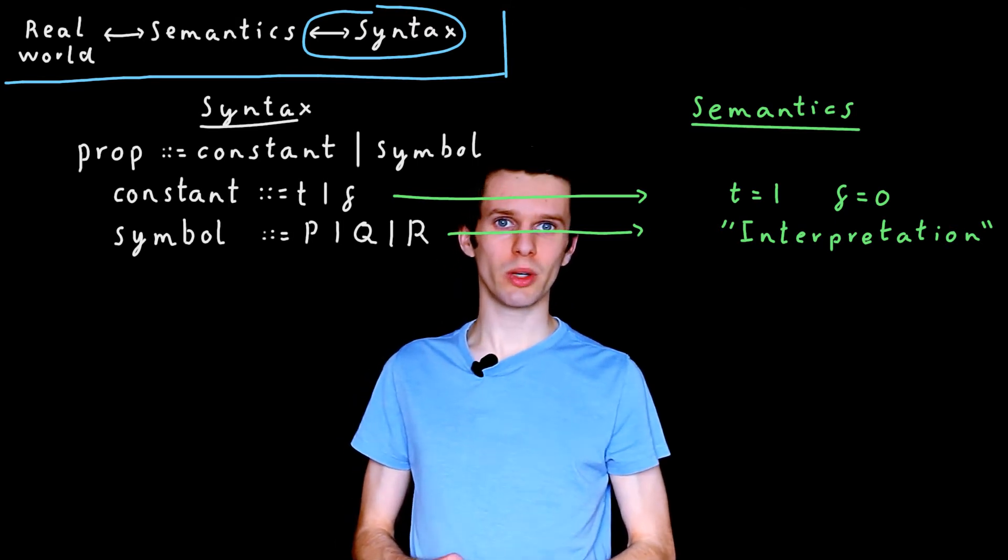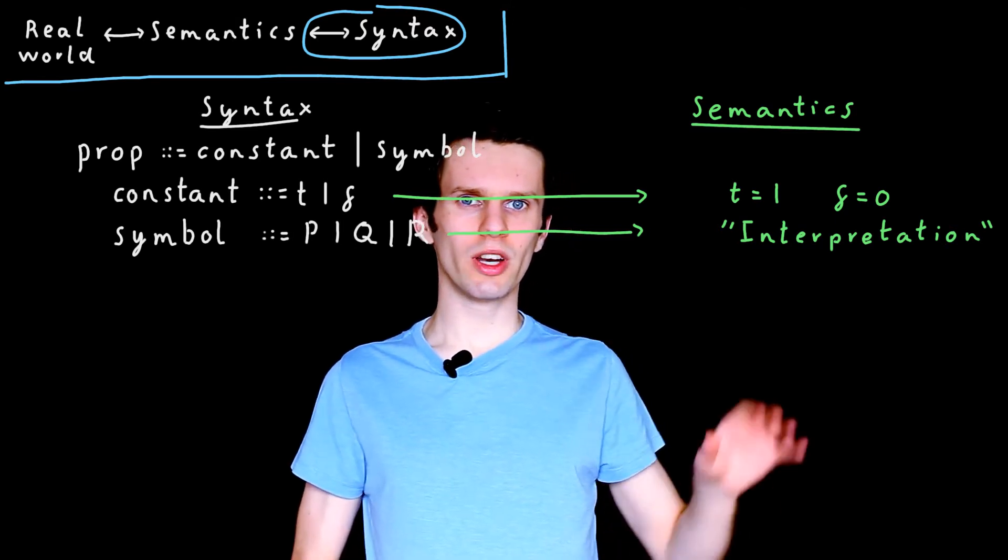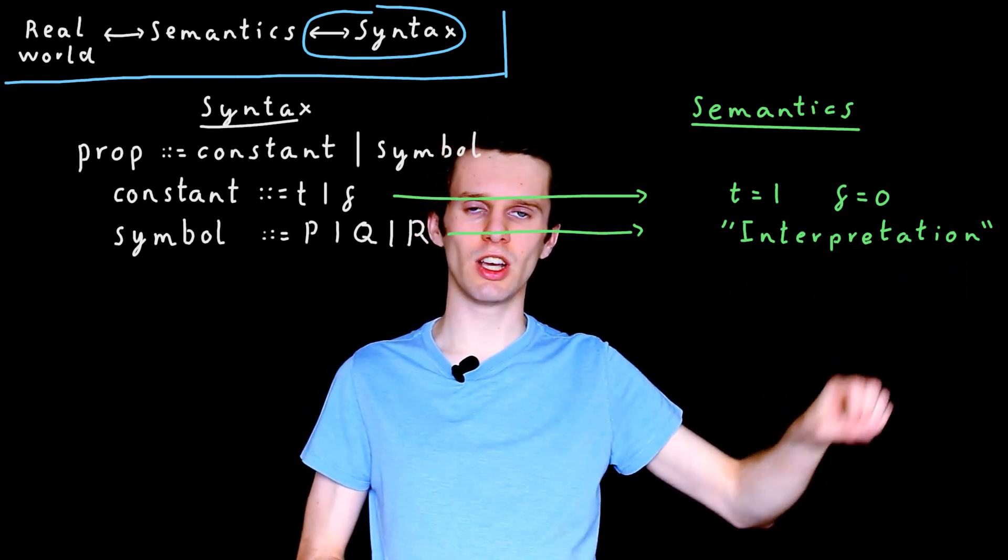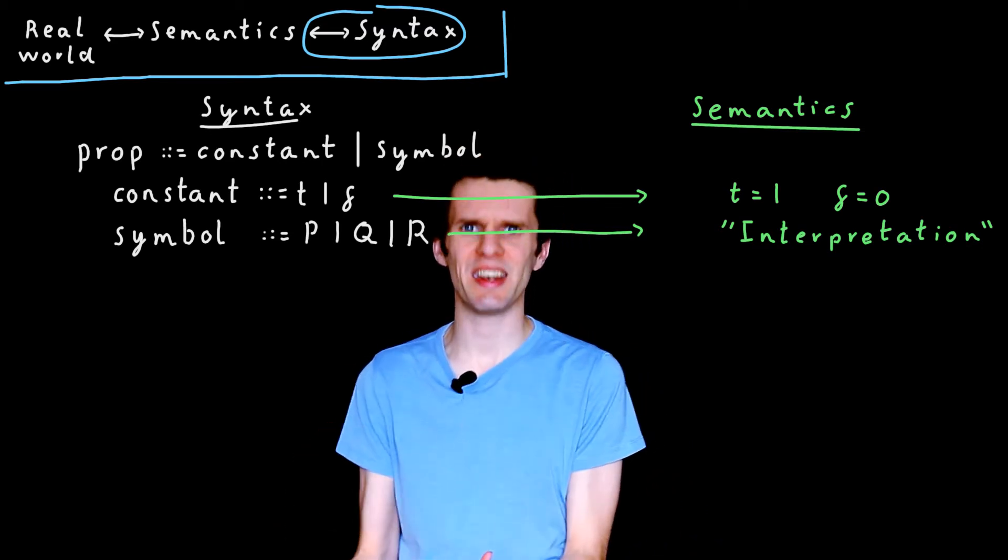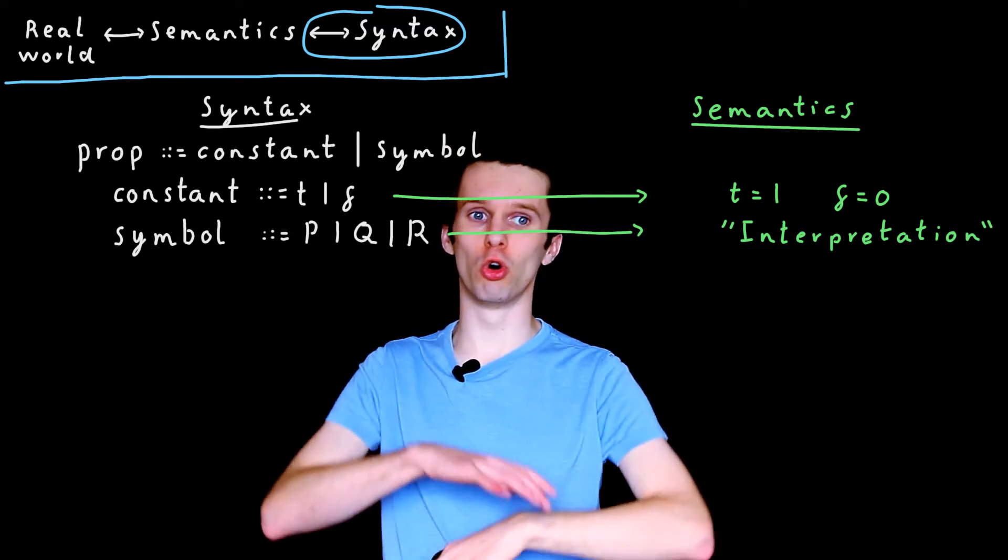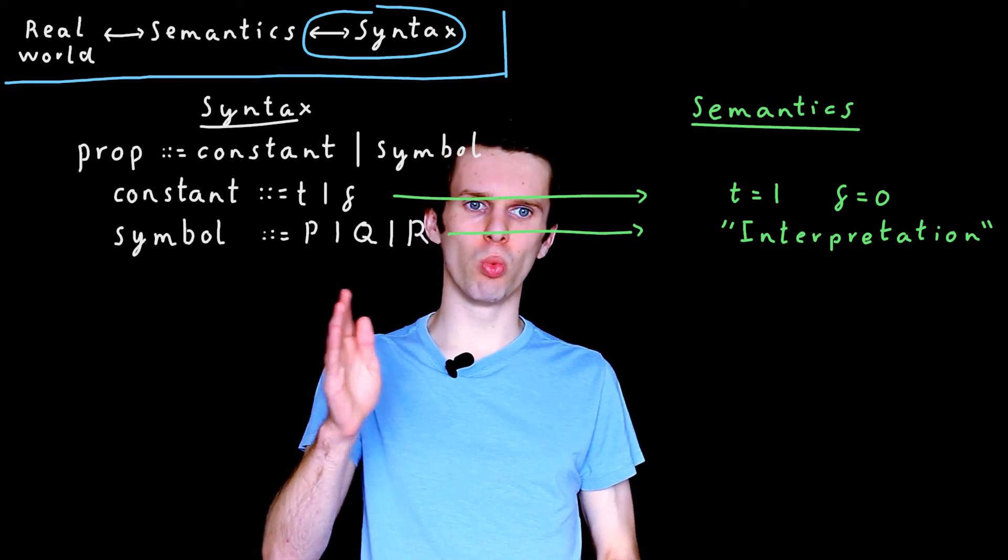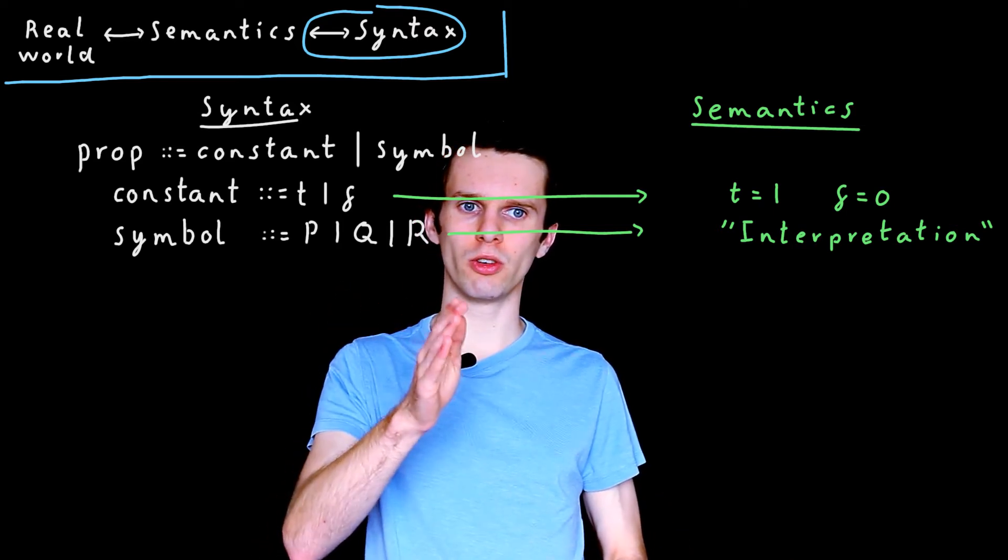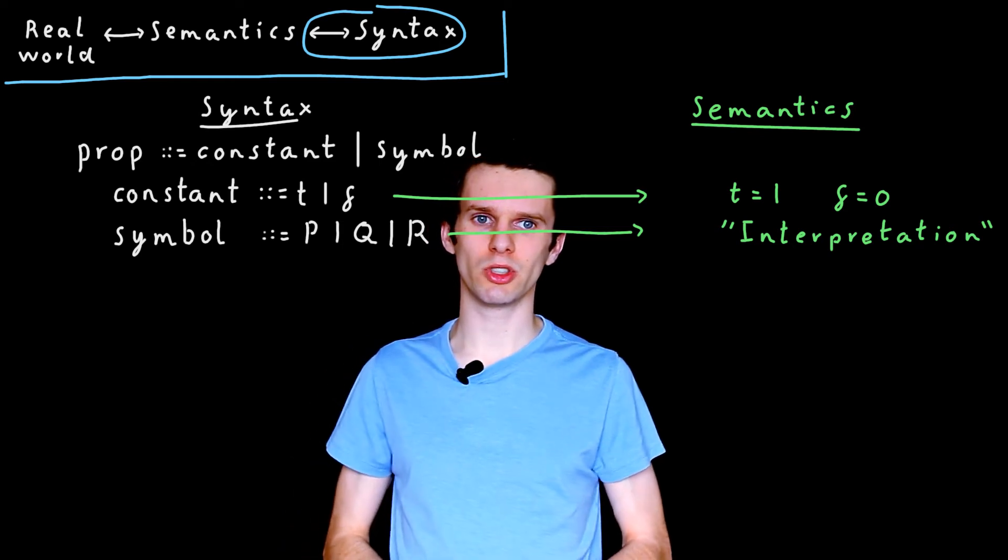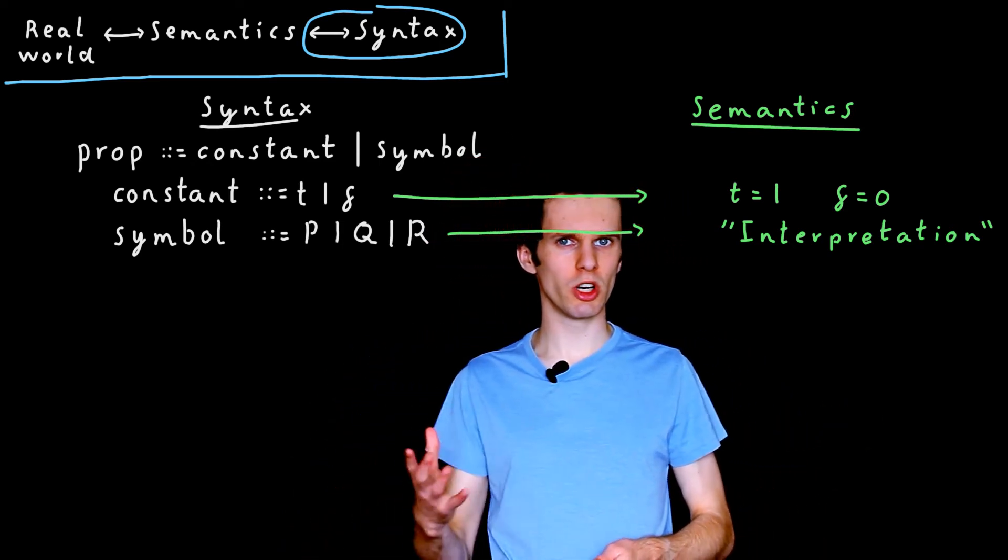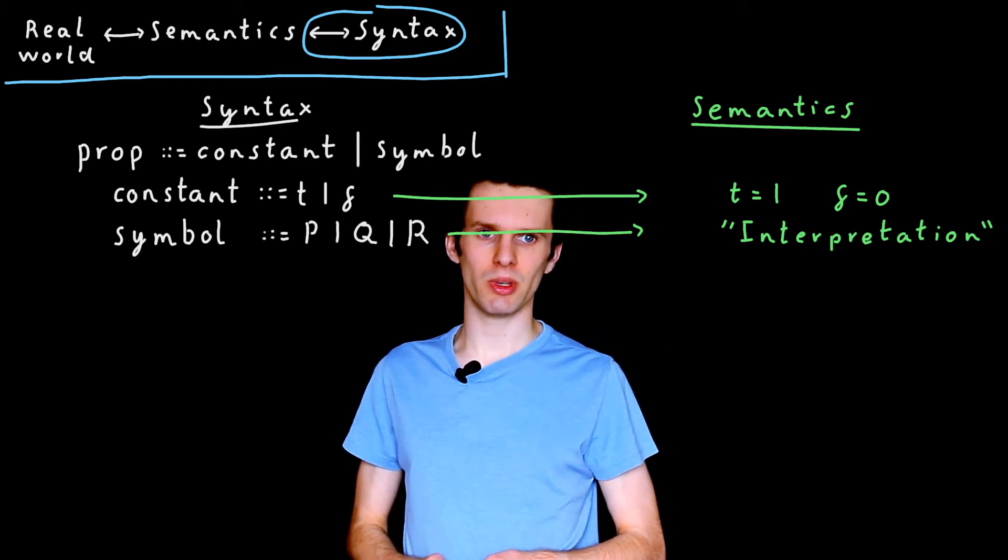In reality, quite often when we're dealing with logics, we're not interested in one particular interpretation. We're interested in what happens when we think about any arbitrary interpretation, or all interpretations. Does a certain statement hold no matter what values of 0 and 1 we assign to our symbols? And we'll see some examples of that in future videos, but it's worth bearing in mind for the time being.